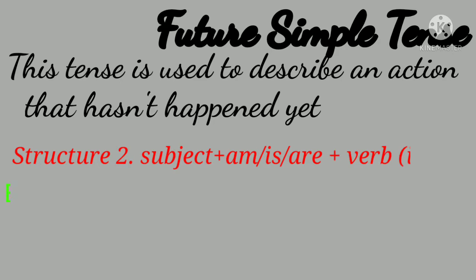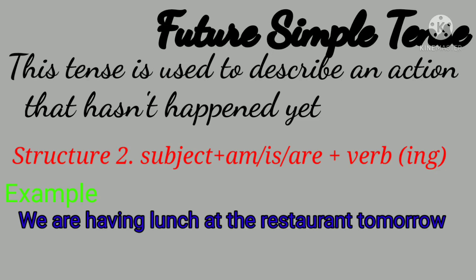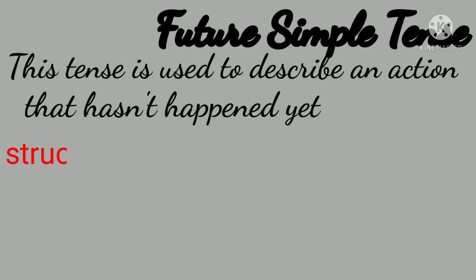Structure 2: Subject plus am/is/are plus verb. Example: We are having lunch at the restaurant tomorrow. I am starting my YouTube channel next week.